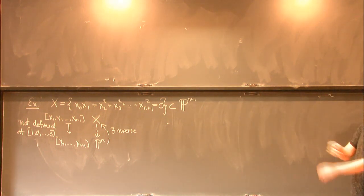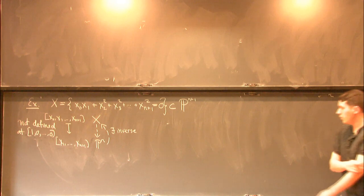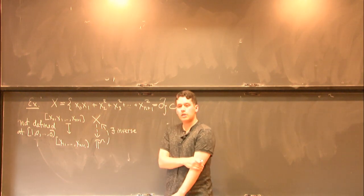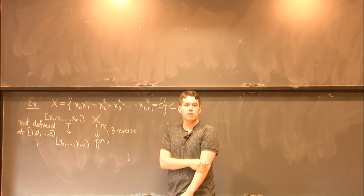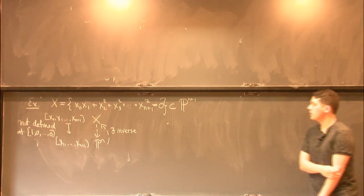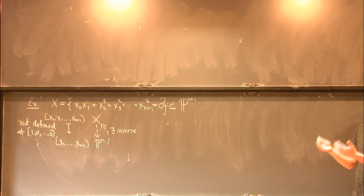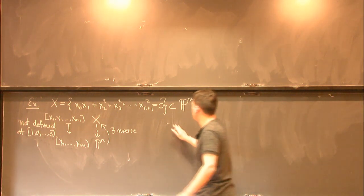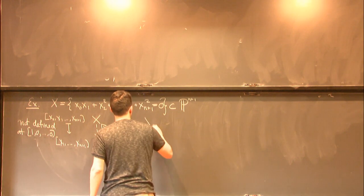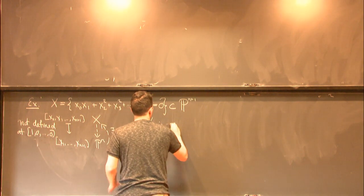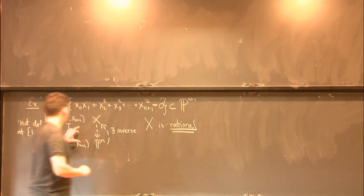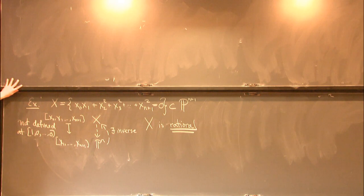But the point I want to make is that in this example, from the perspective of these partially defined maps, x is the same as projective space. And that's a really nice property in some sense. Projective space is the simplest algebraic variety. So this is like saying x is sort of as simple as possible. And there's a name for this. So x is what's called a rational variety. So any variety equivalent to projective space in this way is called rational.